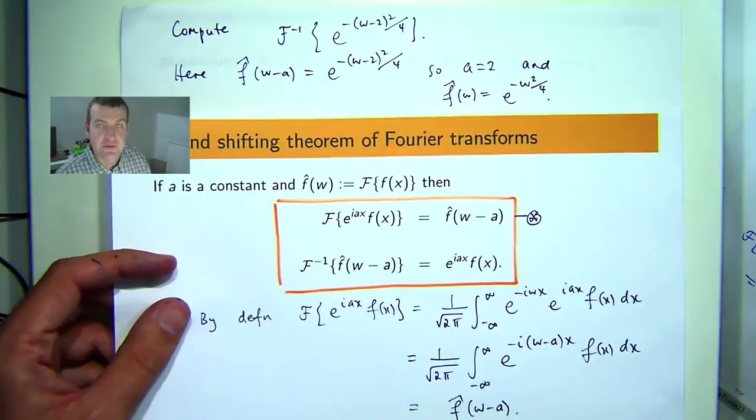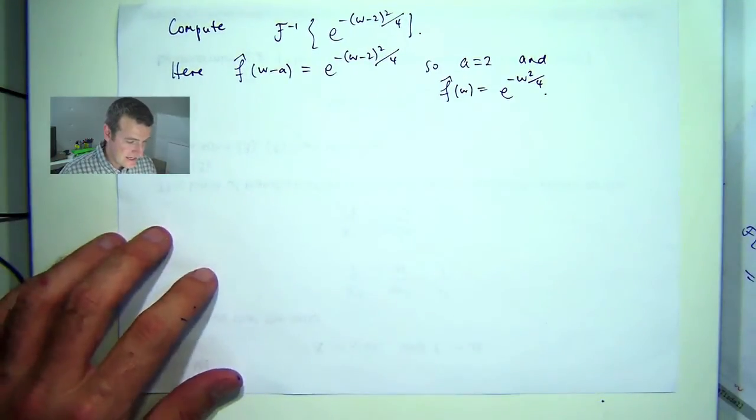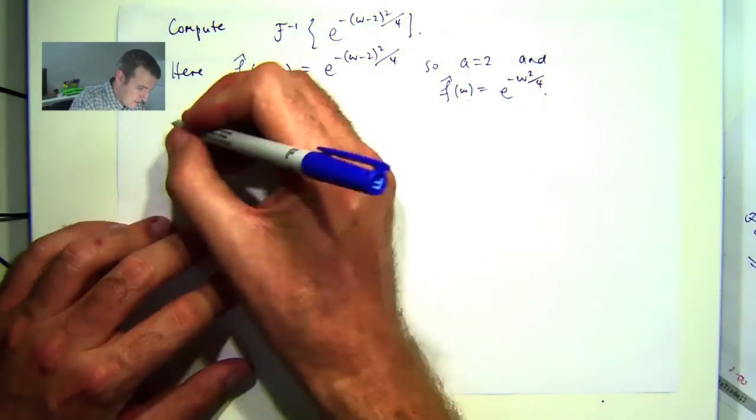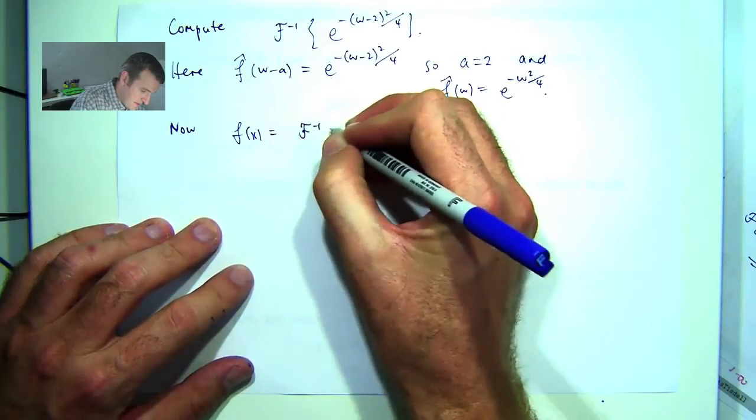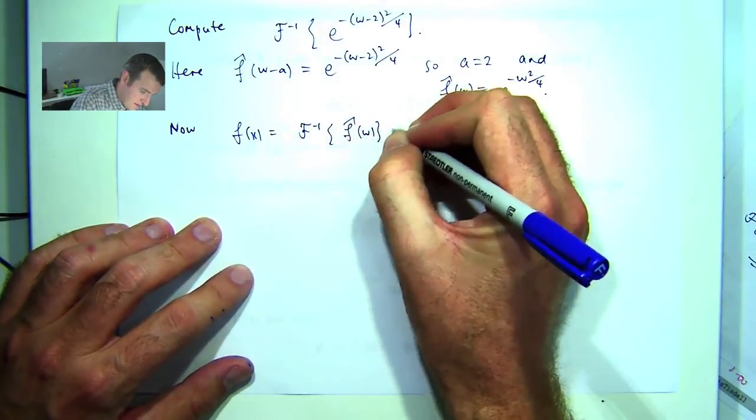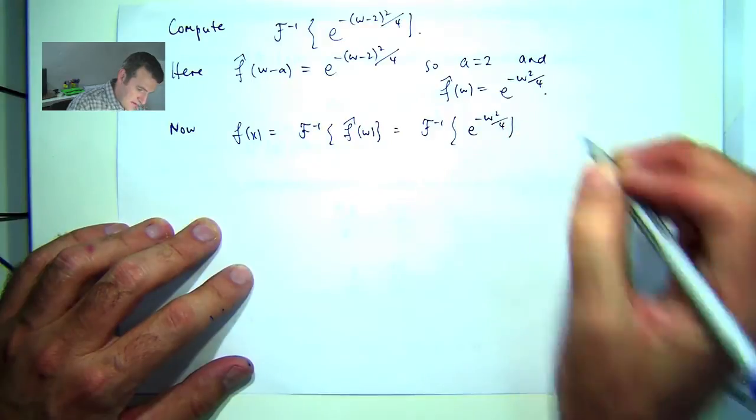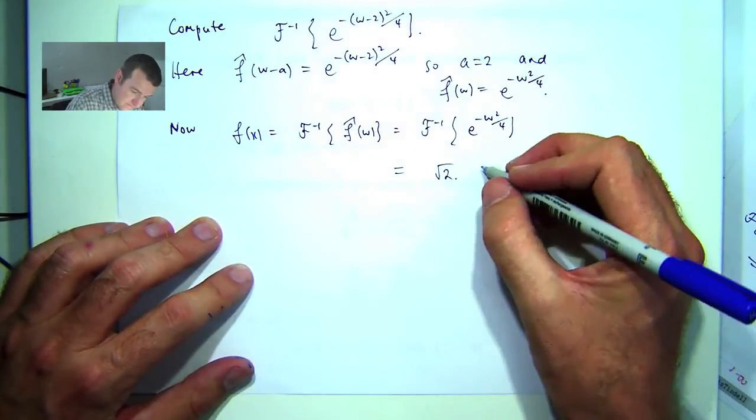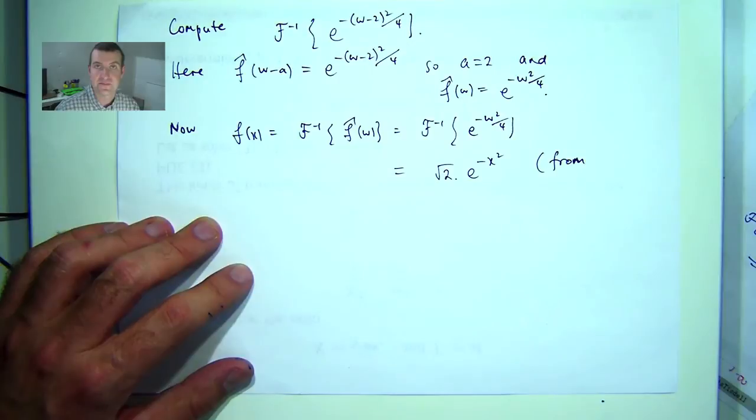Well, this is a Gaussian and we know that the transforms of Gaussians are Gaussians and the inverse transforms of Gaussians are Gaussians. And in fact I proved that in one of the introductory videos on Fourier transforms. So for our example, we want to take the inverse transform of this. Now this is just the following. Now you can, I mean you can compute that directly, it's not that simple to do that. You can look it up on a table or you can look at a video.